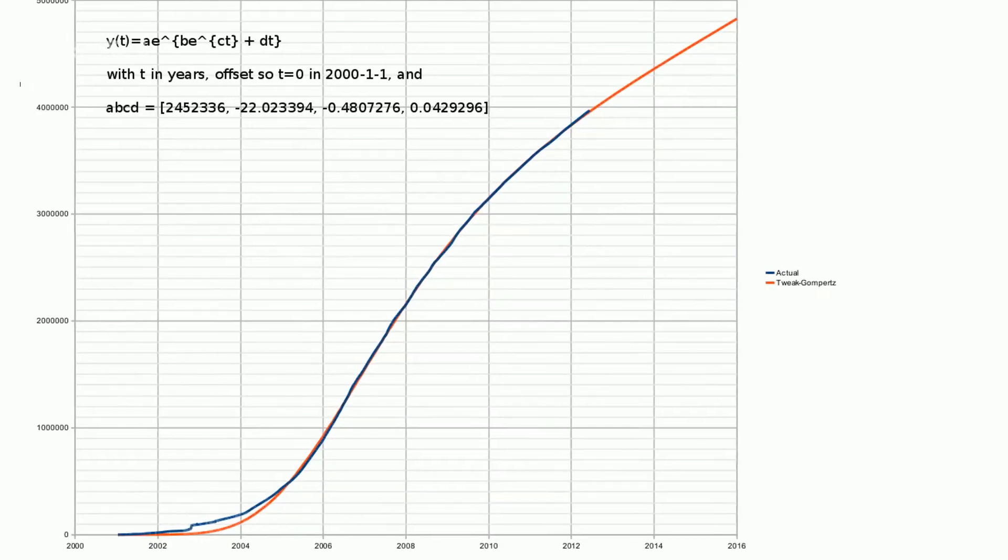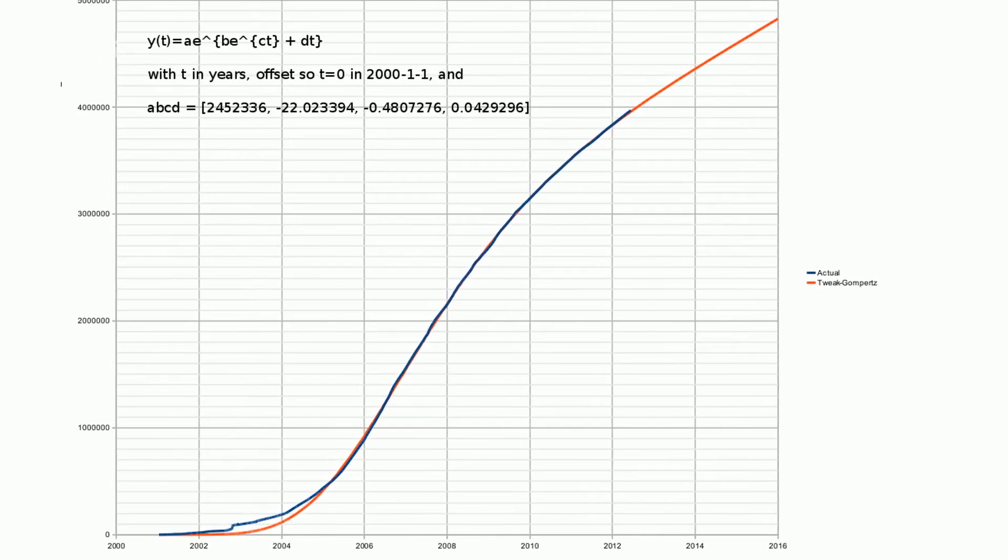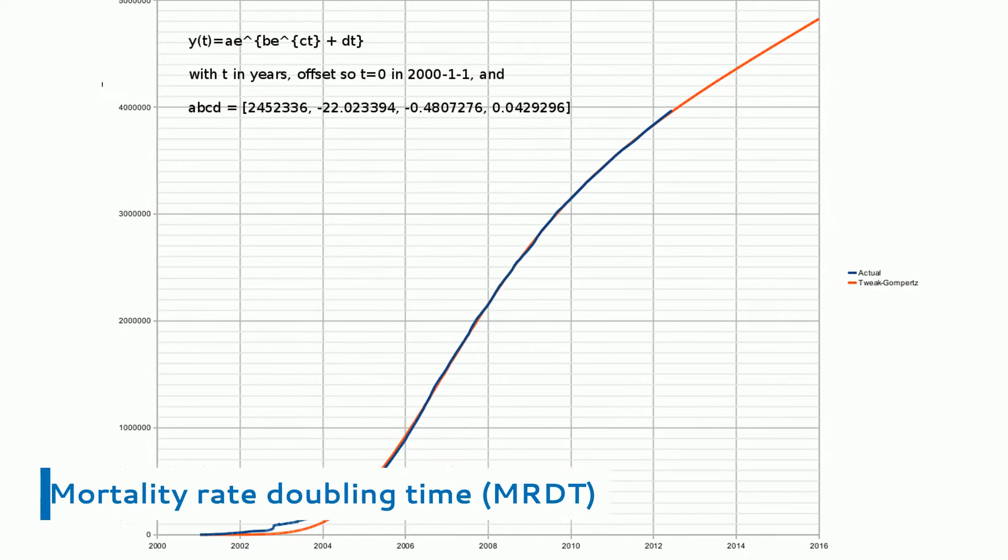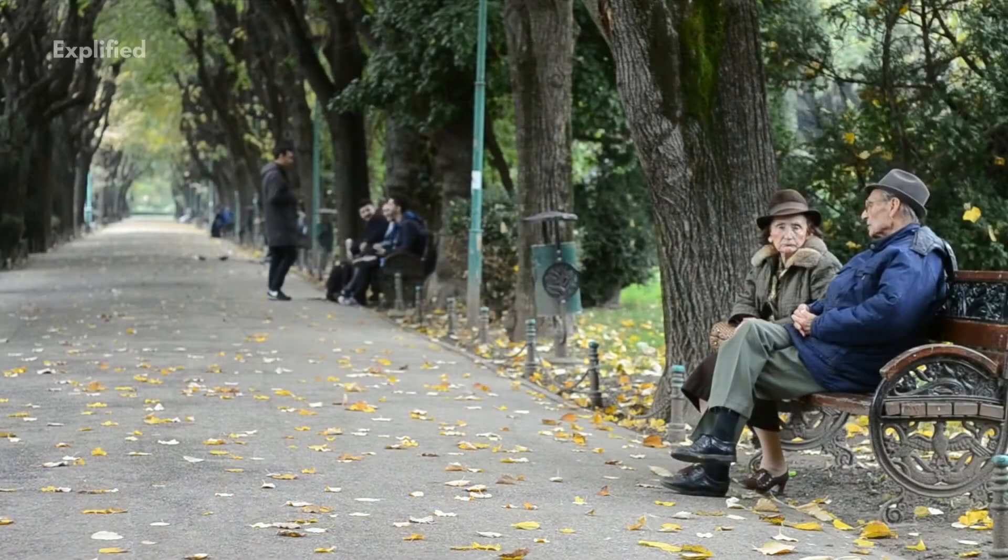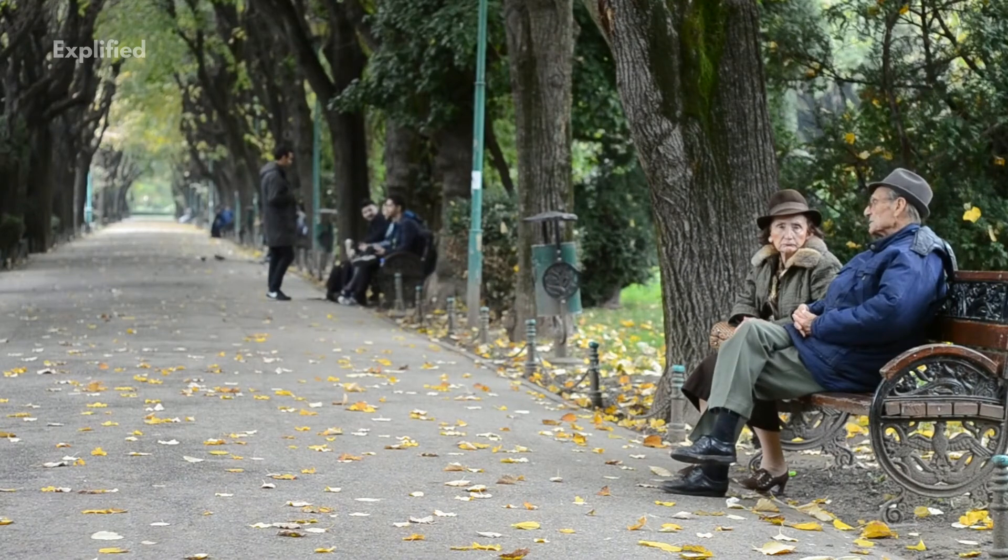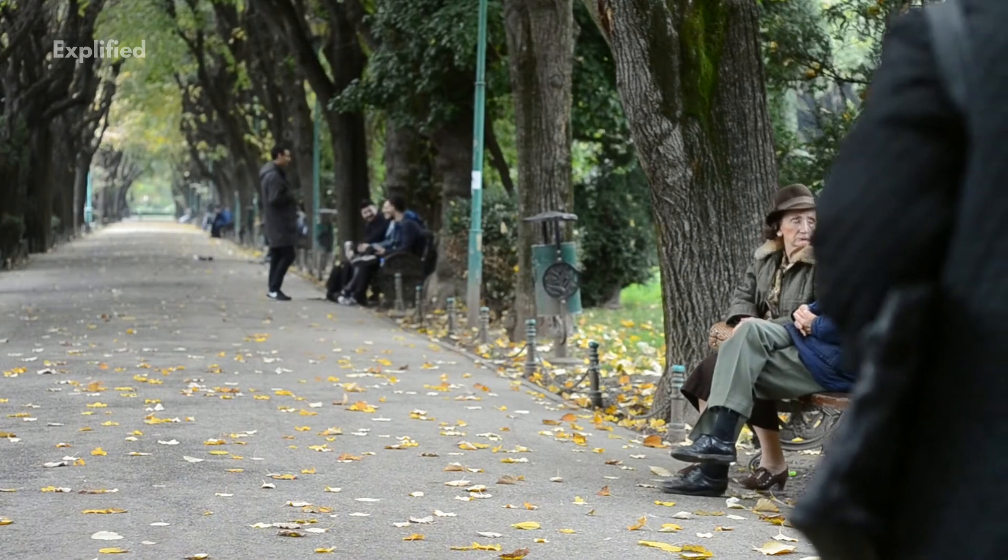The second one is the Gompertz exponent slope β, which is inversely proportional to the mortality rate doubling time. And this MRDT describes the rate of aging, which is known as the relative change in mortality with a given age.